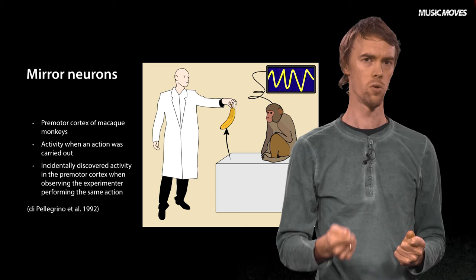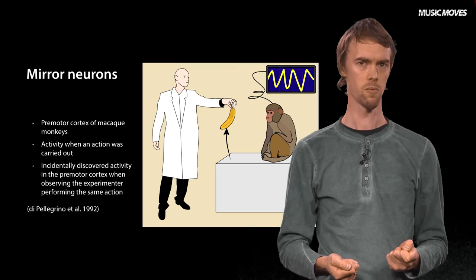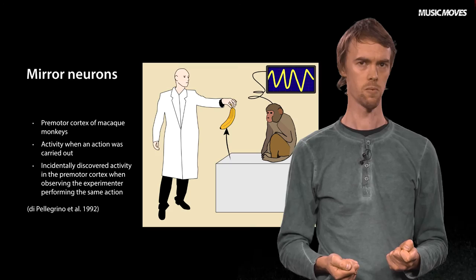The neurons that fired during observation have been labeled mirror neurons. Mirror neurons have later been found to fire also when monkeys hear the sound of an action, such as the sound of breaking a stick. And even for pianists, activity has been found in the premotor cortex when listening to a piano piece, without any overt movement.